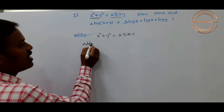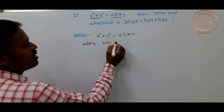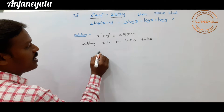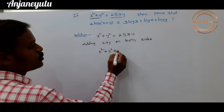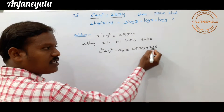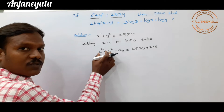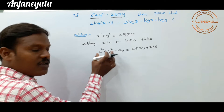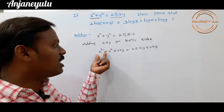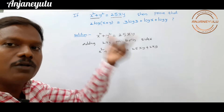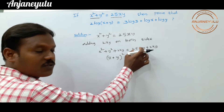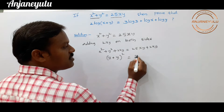Adding 2xy on both sides, it will become x squared plus y squared plus 2xy on the LHS, and 25xy plus 2xy on the RHS. Now x squared plus y squared plus 2xy is in the form a squared plus b squared plus 2ab, which equals (a + b) squared. So x squared plus y squared plus 2xy equals (x + y) squared. Therefore (x + y) squared equals 25xy plus 2xy, which becomes 27xy.